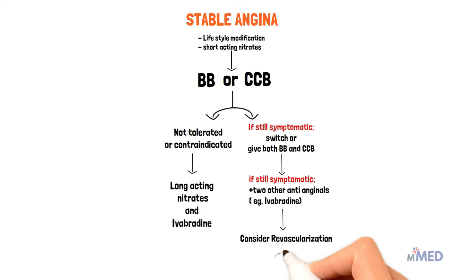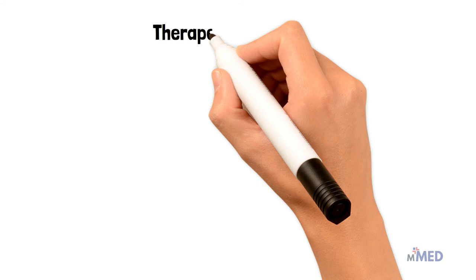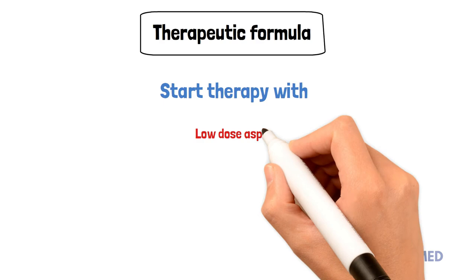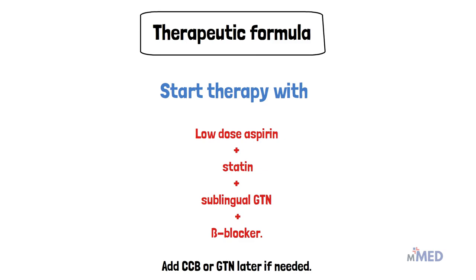If that doesn't work, we should consider revascularization and go for invasive management — either angioplasty with a stent or a coronary artery bypass graft. As an example therapeutic formula, we could start therapy with a low-dose aspirin, give a statin, administer sublingual glyceryl trinitrate, and also give a beta blocker. If required, we could add a calcium channel blocker or add more GTN later if needed.